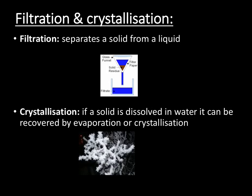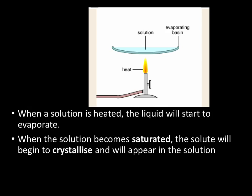Crystallisation also allows us to remove a solid from a liquid, but in this case it's when the solid is dissolved in water. We then evaporate off the water and allow the crystals to appear. This happens because we gradually evaporate off the liquid, making the solution into a saturated solution. The solute will then begin to crystallise. As we continue to heat off the water, we will get more and more crystals appearing.